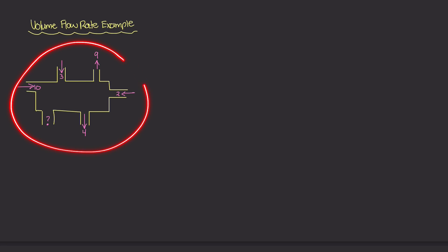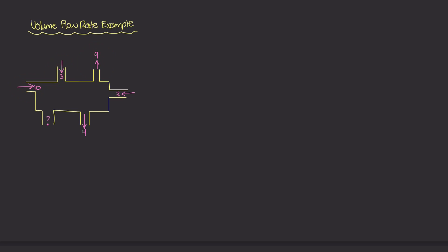In this example, we have a system that I've drawn out here, and there are multiple inlets and outlets to this system, all labeled with pink or red arrows. These arrows represent how much flow rate is coming into or out of the system. For example, on the left we have 10 meters cubed per second coming in, and on the bottom we have 4 meters cubed per second coming out. All of these are flow rate numbers — Q equals VA — and the units are meters cubed per second.